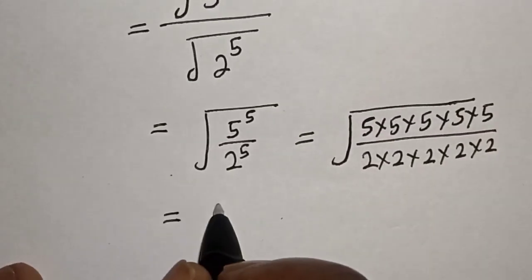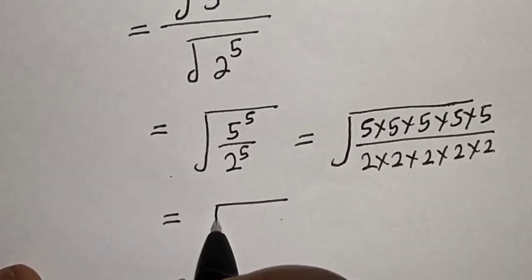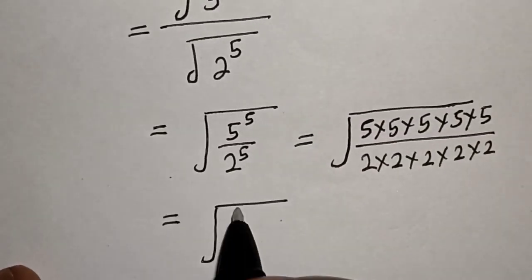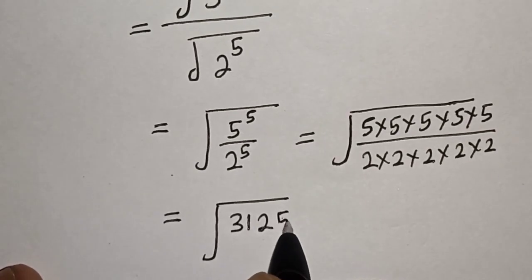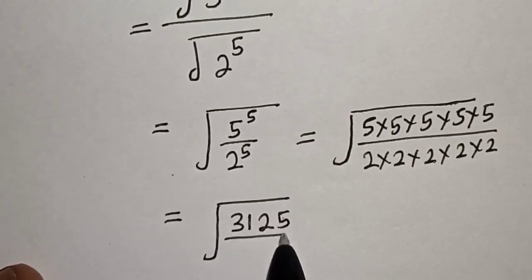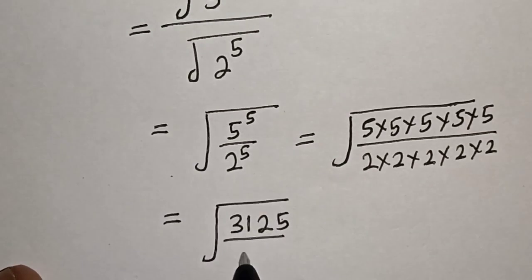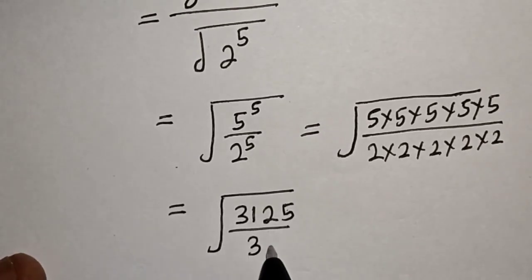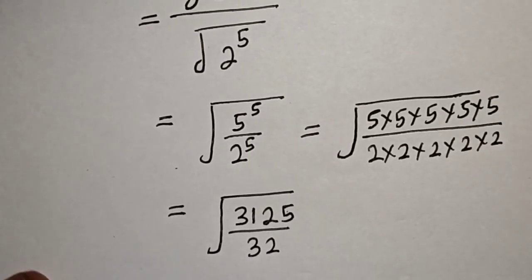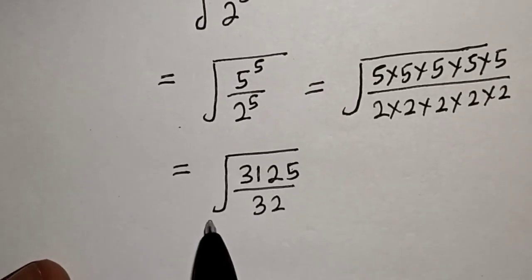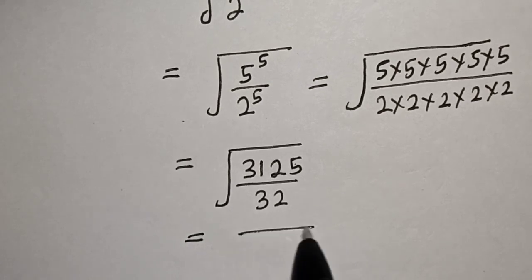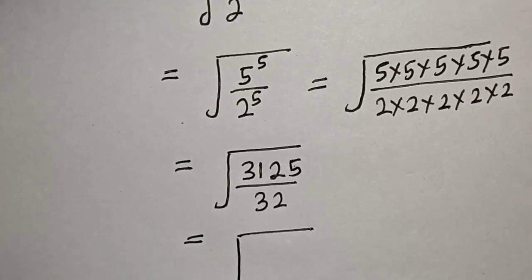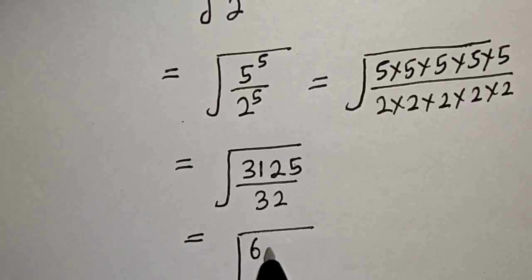This is equal to the square root of 3125 over 32, since 5 raised to the power of 5 is 3125 and 2 raised to the power of 5 is 32. This simplifies to the square root of 3125 over 32, which we can further write as the square root of 625.